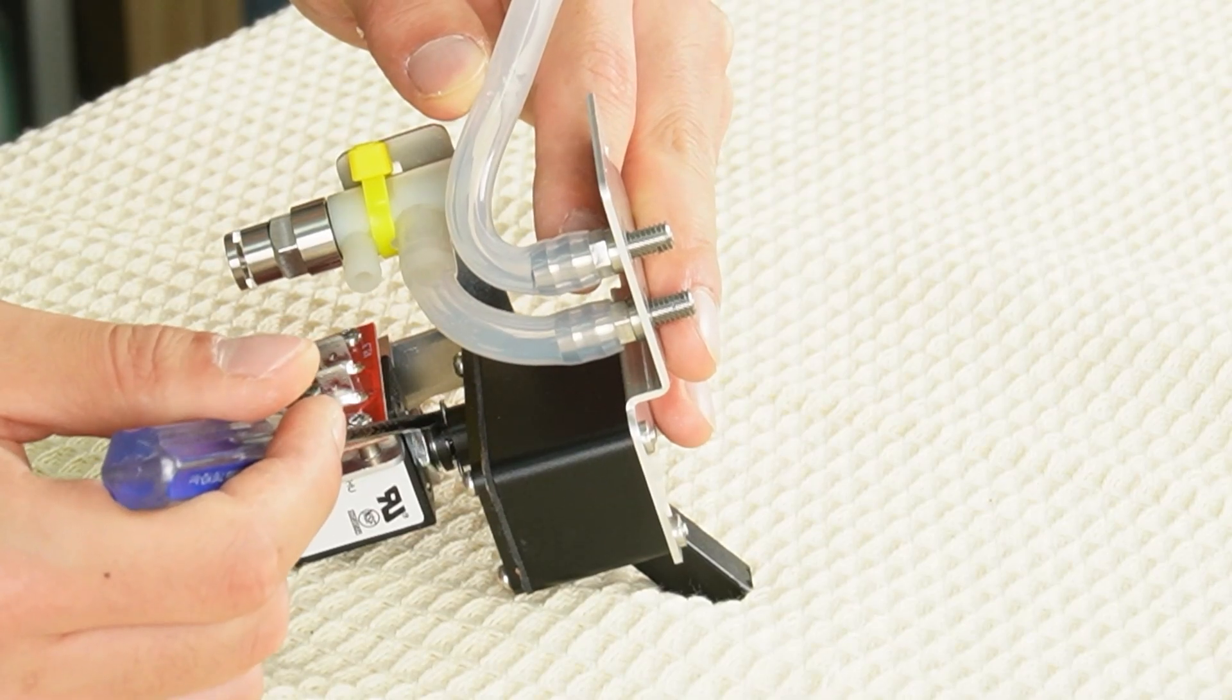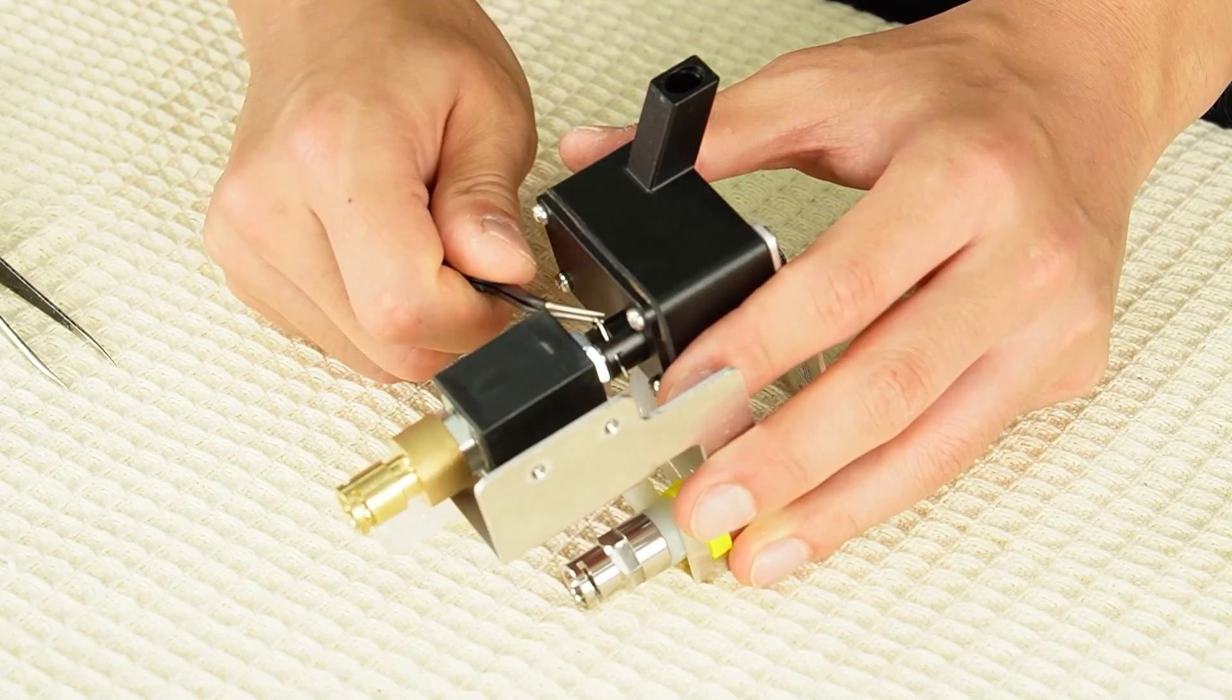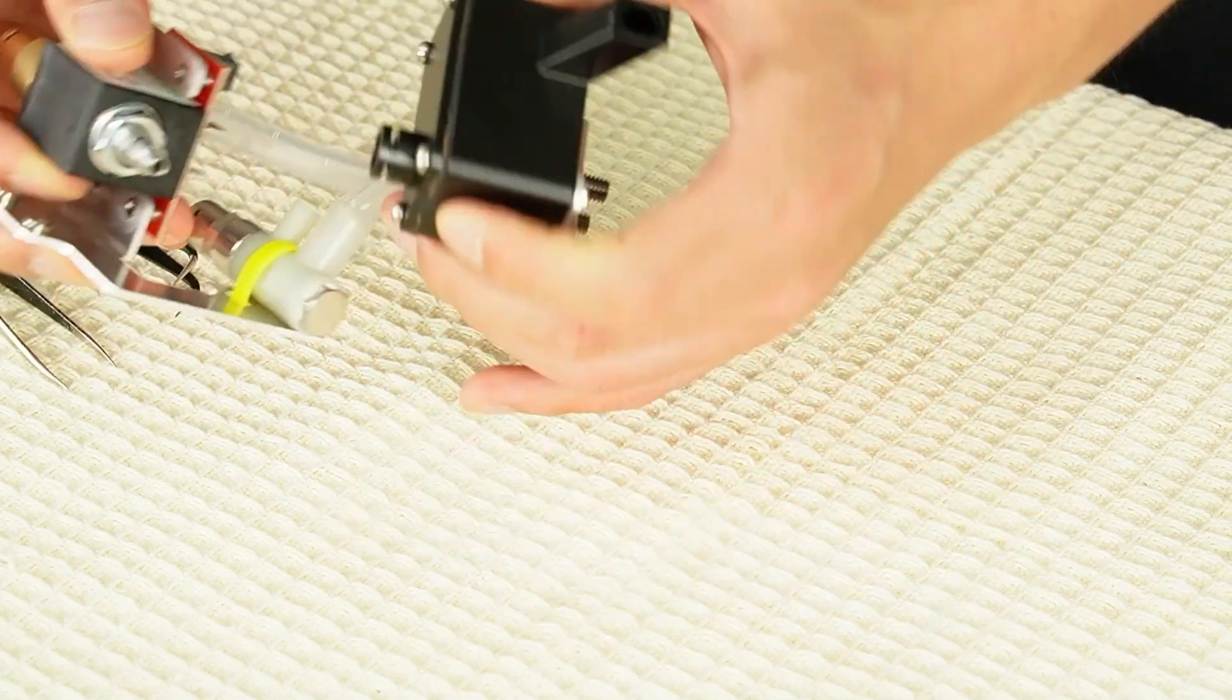Remove the clip connecting the drain valve to the drain box using angled tweezers or long nose pliers and pull the valve out.